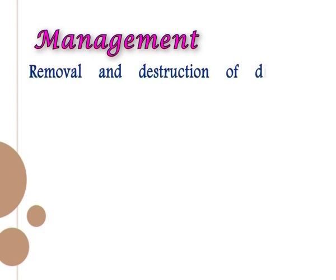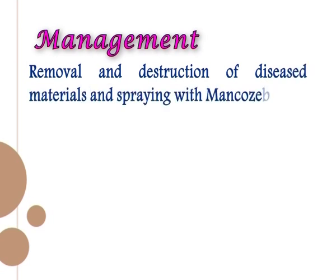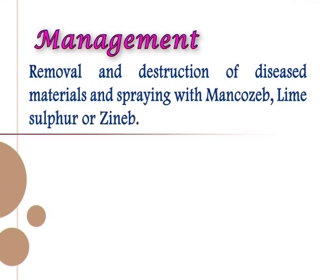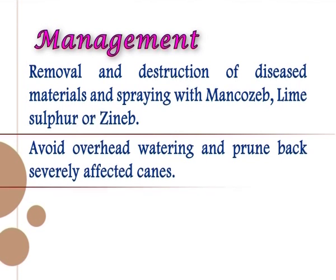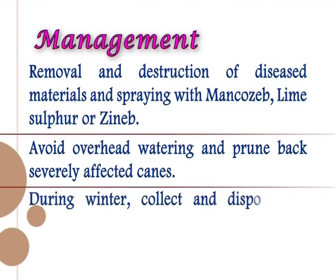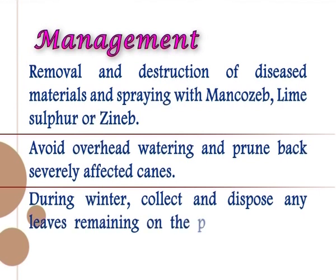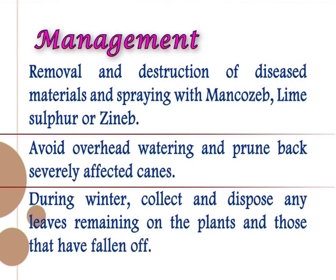Management of rust: removal and destruction of diseased materials, and spraying with Mancozeb, lime sulphur, or Zineb. Avoid overhead watering and prune back severely affected canes. During winter, collect and dispose of any leaves remaining on the plants and those that have fallen off.